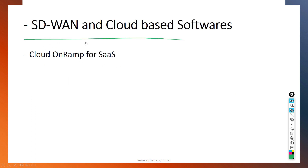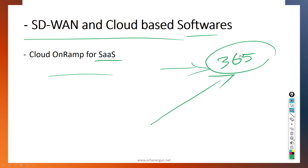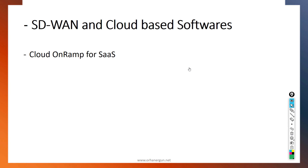Then we will talk about SD-WAN and cloud-based software. There is a feature called Cloud On-Ramp for Software as a Service. The idea is that end users today are accessing cloud-based software like Microsoft Office 365, and they expect a better user experience. Cisco SD-WAN aims to improve that user experience.